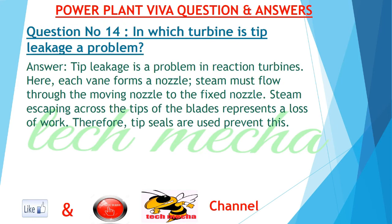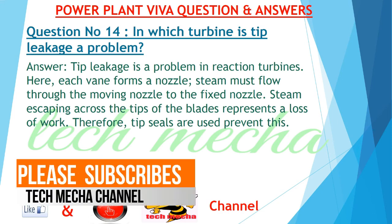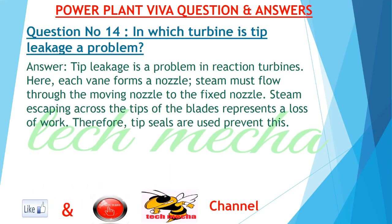Question number 14: In which turbine is tip leakage a problem? Tip leakage is a problem in reaction turbines. Here, each vane forms a nozzle and steam must flow through the moving nozzle to the fixed nozzle. Steam escaping across the tips of the blades represents a loss of work. Therefore, tip seals are used to prevent this.